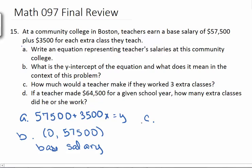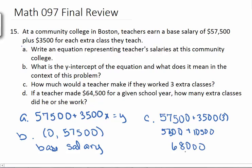What about C? How much would they make if they worked three extra classes? Well, we have our base salary plus three extra classes. So $57,500 plus $3,500 times three. Make sure you use order of operations and do your multiplication first. So $3,500 times three is $10,500. Plus $57,500 would be $68,000. So that's how much they would make working three extra classes.